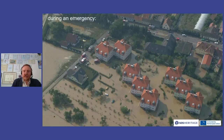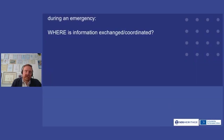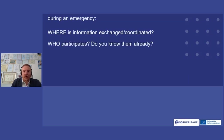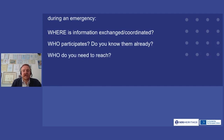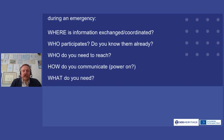Once an emergency hits, think about: where is the information exchange happening and who is coordinating? Who participates in these locations? Do you already know these people and have access to them? Who do you need to reach in case of emergency, how would you communicate, and do you even have power?